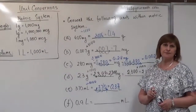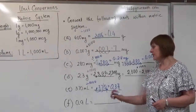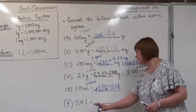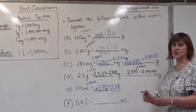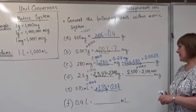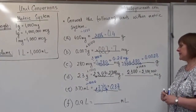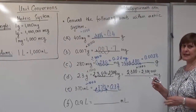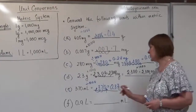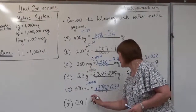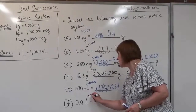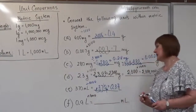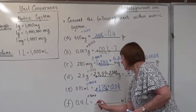The final example is a conversion from a larger unit to a smaller unit. We have 0.9 liters, which is 9 tenths of a liter, and we must multiply by 1,000.